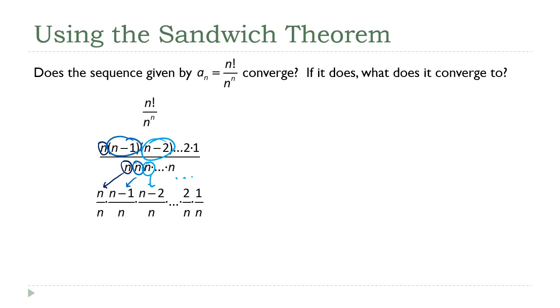But in every other factor, the numerator is smaller than the denominator, which means it's going to be less than or equal to 1. Now, remember, if you multiply something by a number between 0 and 1, it gets smaller.